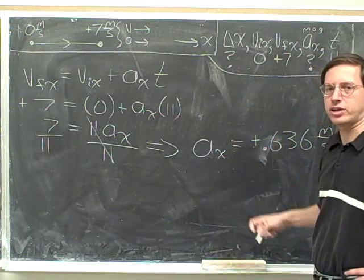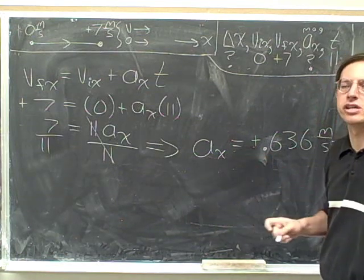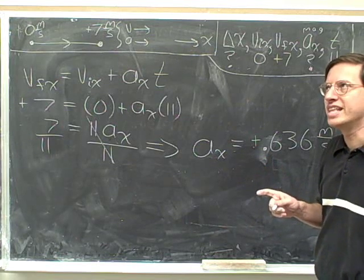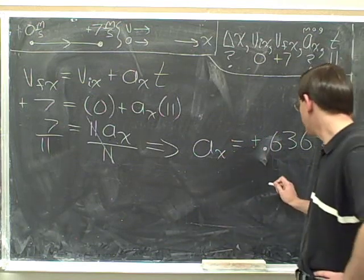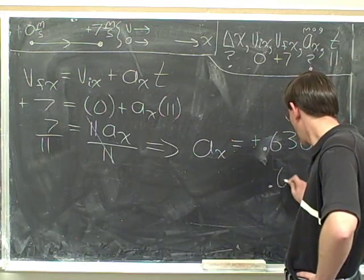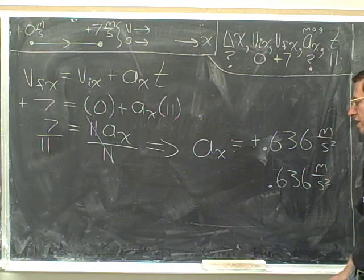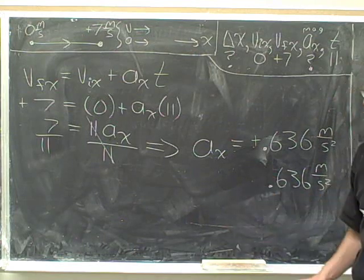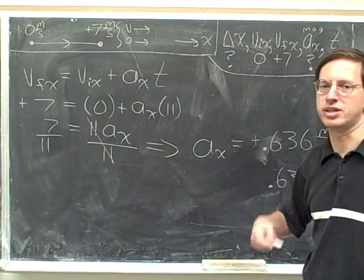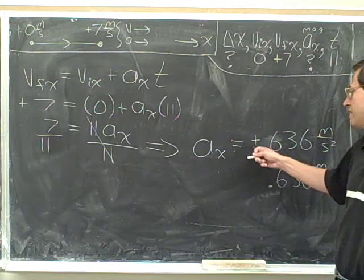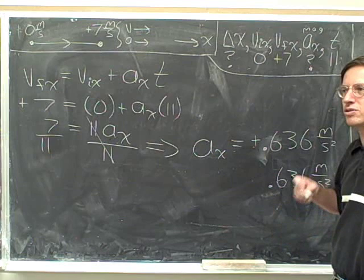All right. Now, this is actually not quite the correct answer, though, because remember, they weren't asking for the acceleration. This is the acceleration. If you go back, you'll see they were asking for the magnitude of the acceleration. Well, the magnitude of the acceleration is just 0.636 meters per second squared with no sign. It doesn't make sense to put a sign in front of a magnitude. Magnitudes are always positive. It's really kind of nonsensical, then, to put a sign in front of them. So, this would be a good way to answer if they were asking for the acceleration. But this is a good way to answer if they're asking for the magnitude of the acceleration.